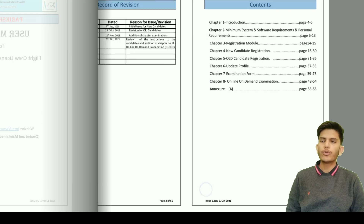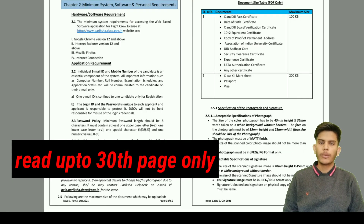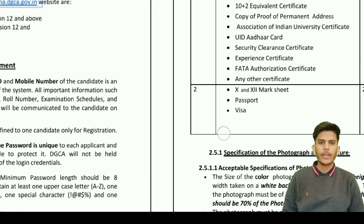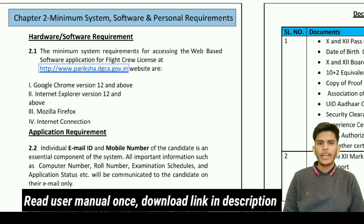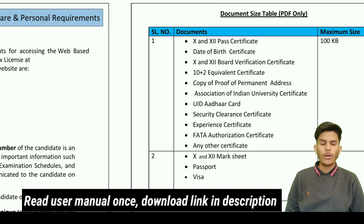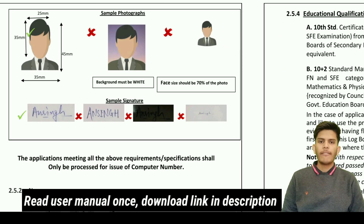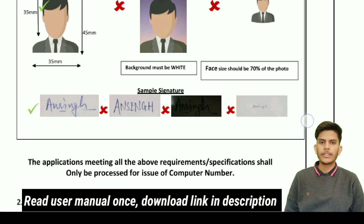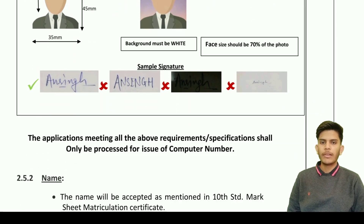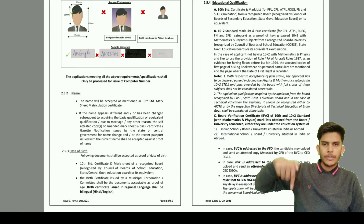First of all, I will recommend you to read this 55-page user manual especially made for computer number application for flight crew. It has each and every piece of information about the document specifications and other details. Although I will try to cover everything in this video, I will recommend you to read it at least once before submitting your application. It is available on Pariksha's website, and I will put the link in the description.